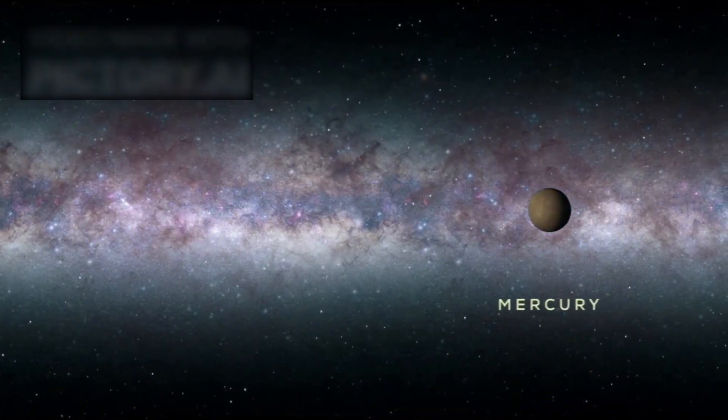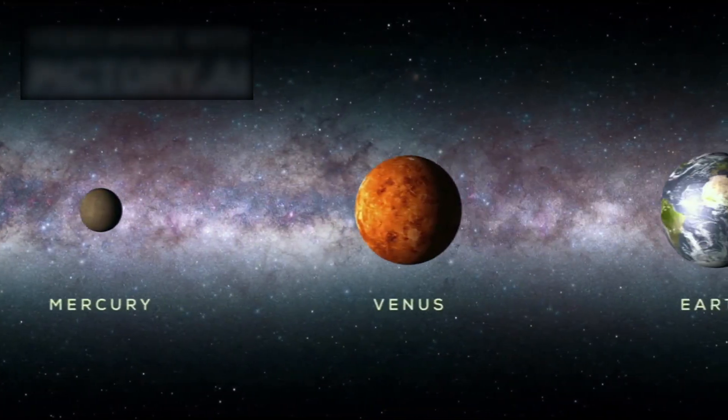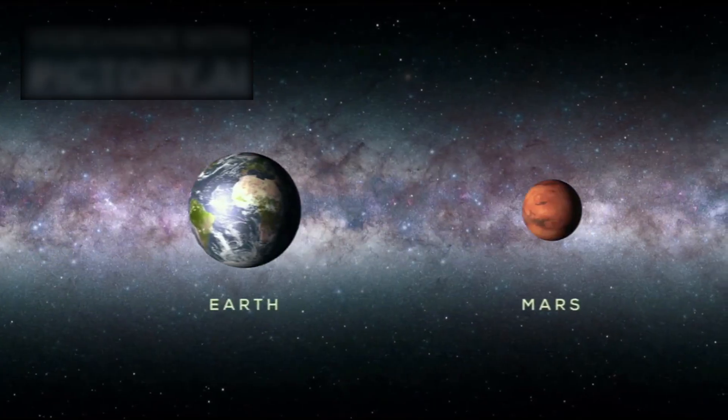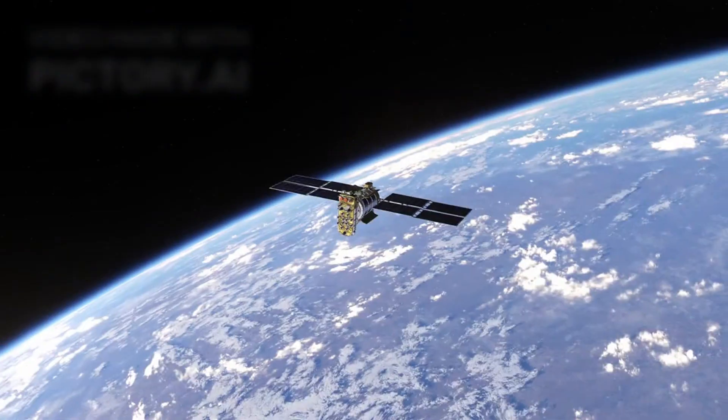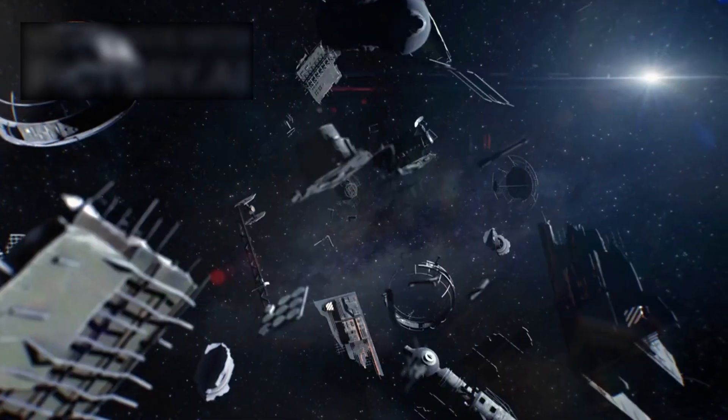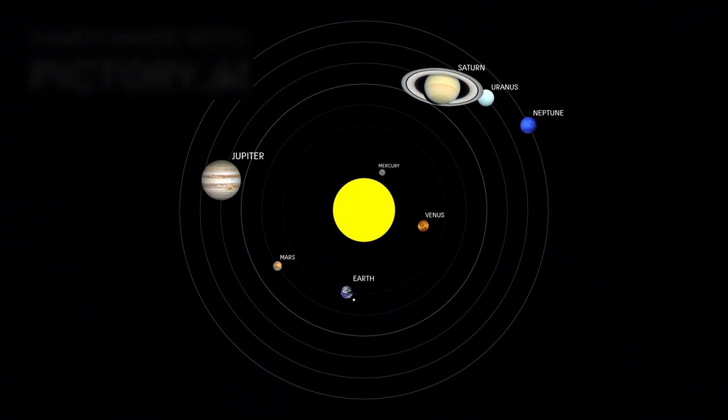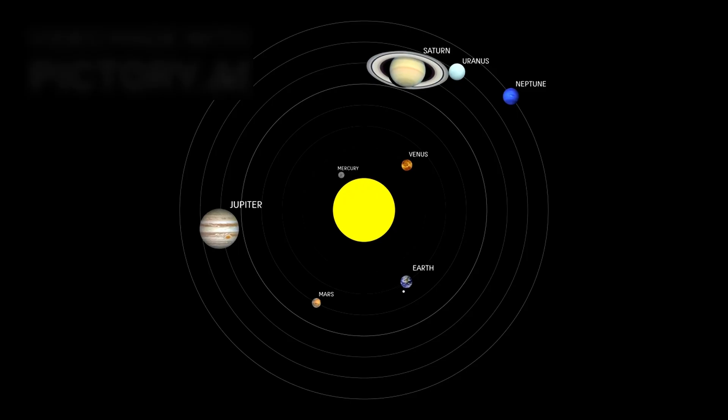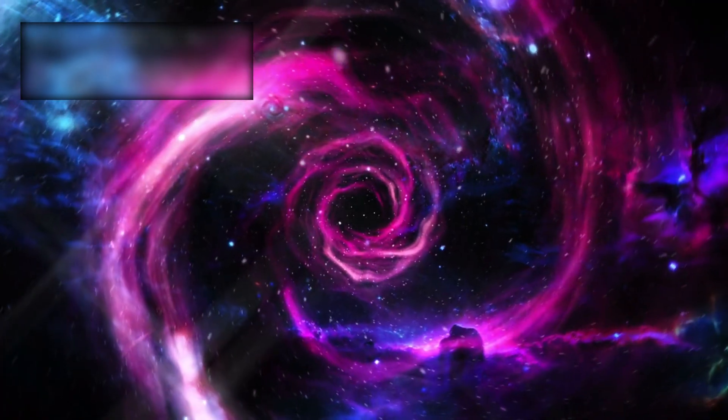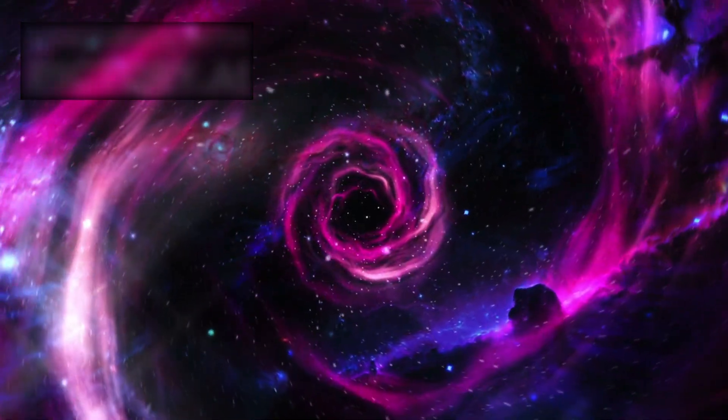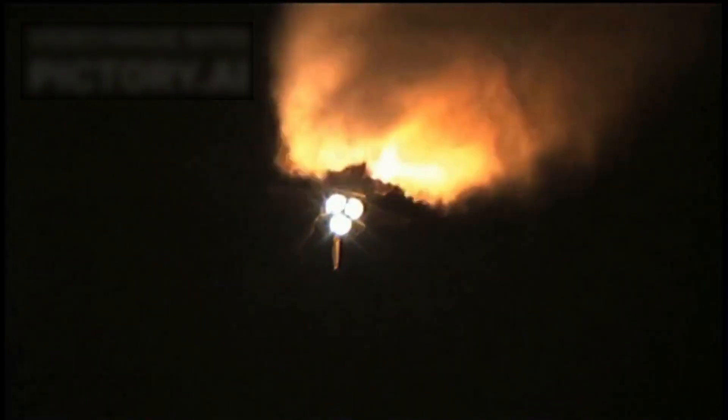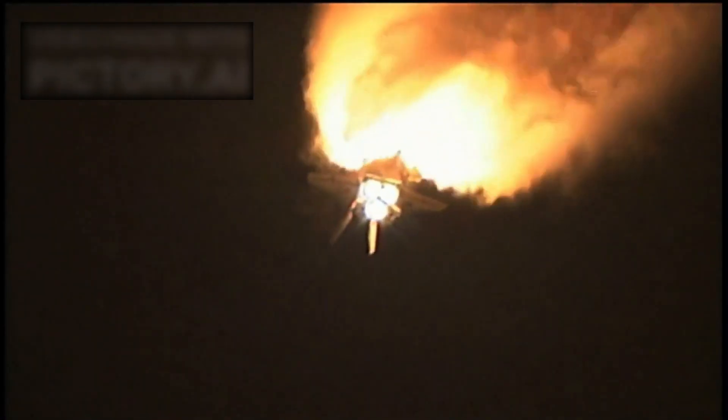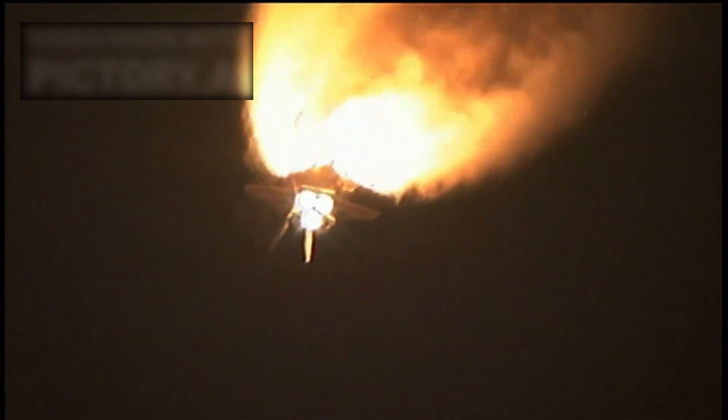Preliminary data suggest the nucleus may be on the upper end of estimates, closer to 5 km wide. Enormous. Dense. Heavy. And unlike anything we've ever seen drifting through the solar system. The story of 3I Atlas is still unfolding. But one thing is already clear: it's rewriting everything we thought we knew about what waits between the stars.